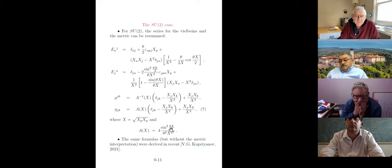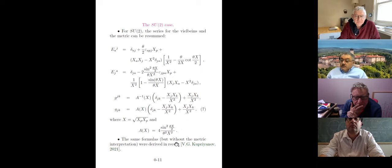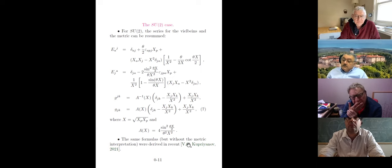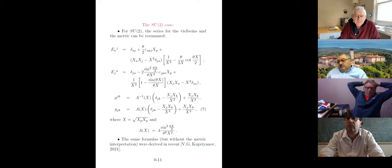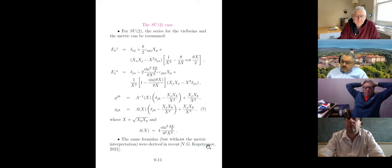This is just interpretation. These exact same formulas — but with a completely different interpretation — were recently derived by Kupriyanov, who considered this genuinely as a non-commutative geometry manifold with what he calls a Poisson structure. He doesn't interpret these expressions as vielbeins and a metric; I do — that's the only difference.